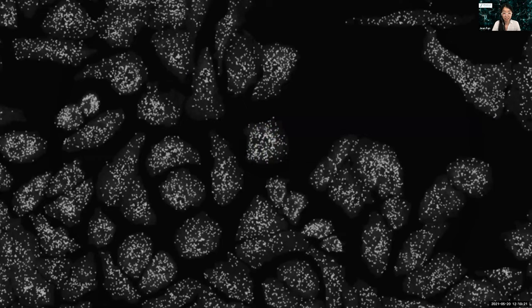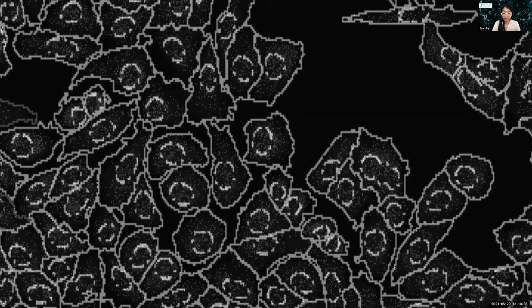We can segment these cells and essentially count the number of each gene species within each cell, allowing us to achieve single-cell resolution spatially resolved transcriptomic profiling. Previously, in our PNAS paper from two years ago, we applied MERFISH to profile over 10,000 genes in U2OS cells. That allowed us to ask questions regarding not only the spatial organization of RNAs within the cell, but also the organization of transcriptionally distinct cell states within culture.